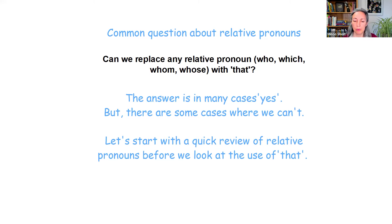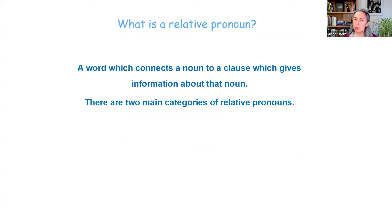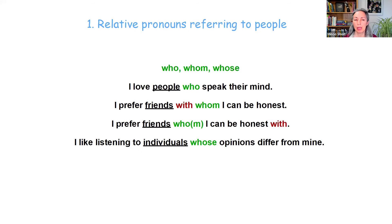Let's start with a quick review of relative pronouns before we look at the use of the word 'that'. A relative pronoun is a word which connects a noun to a clause which gives information about that noun. There are two main categories. The first is relative pronouns that refer to people, and there are three of those: who, whom, and whose.